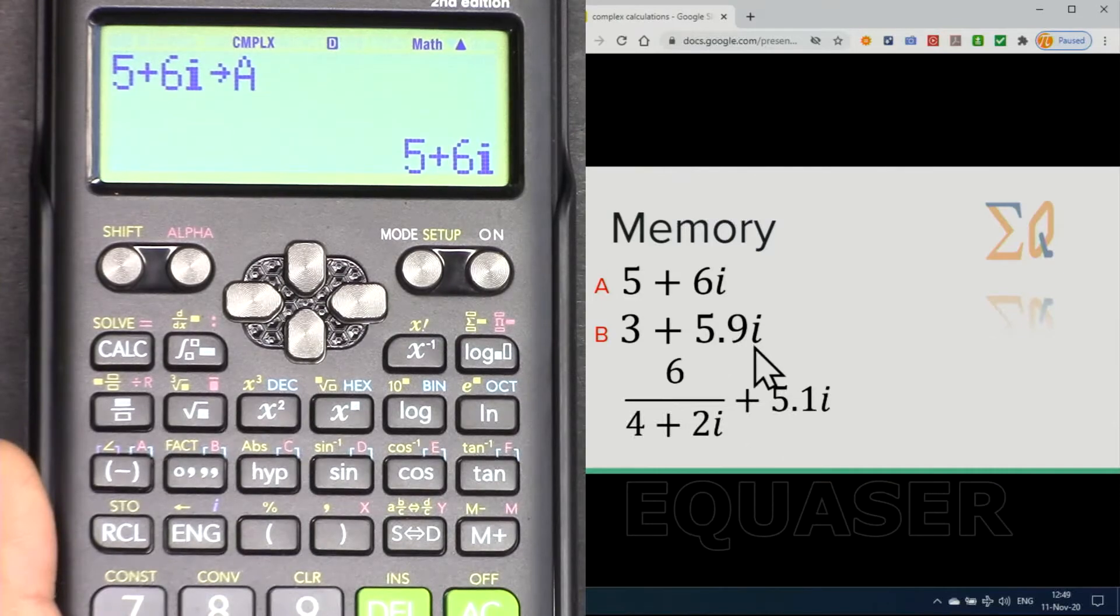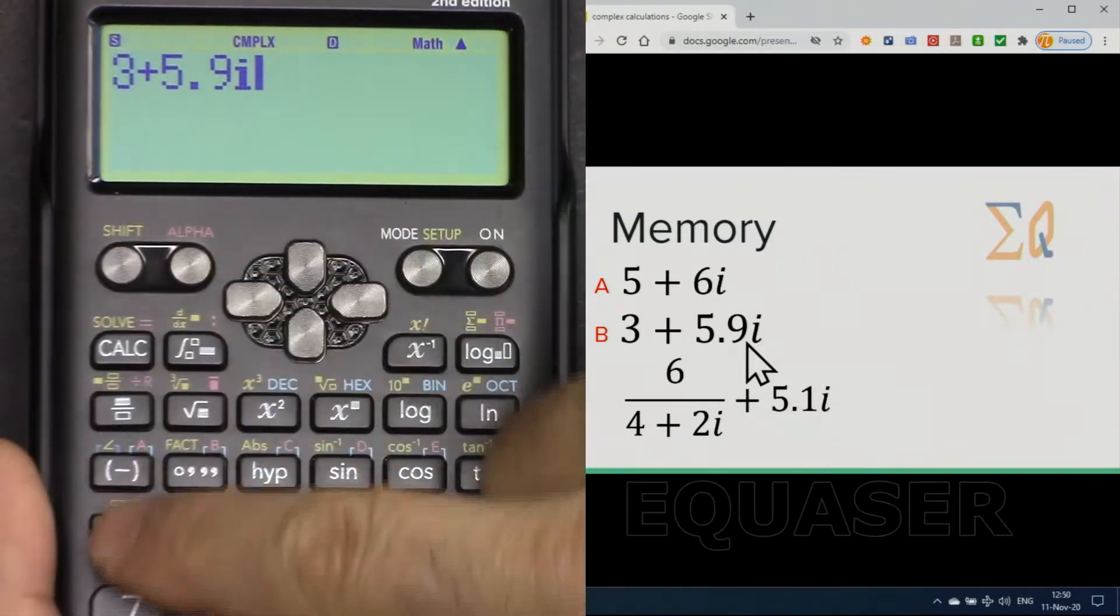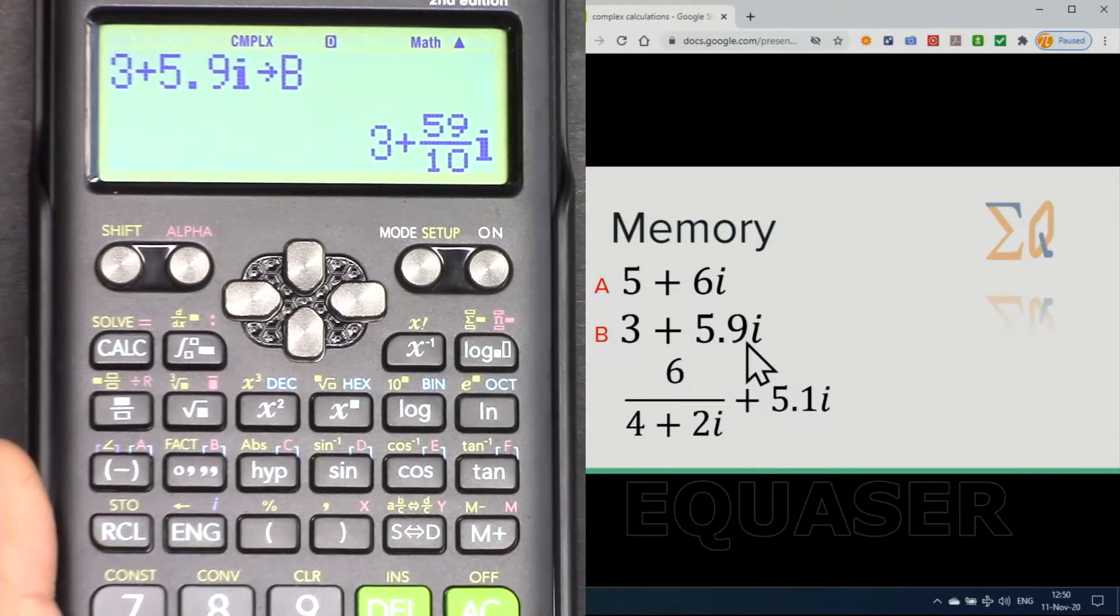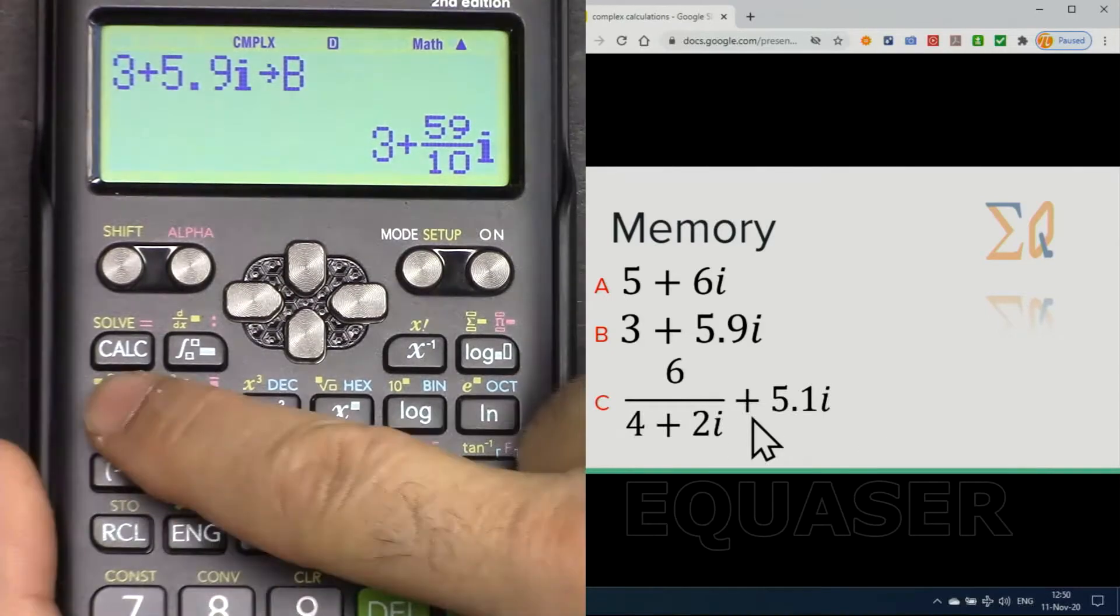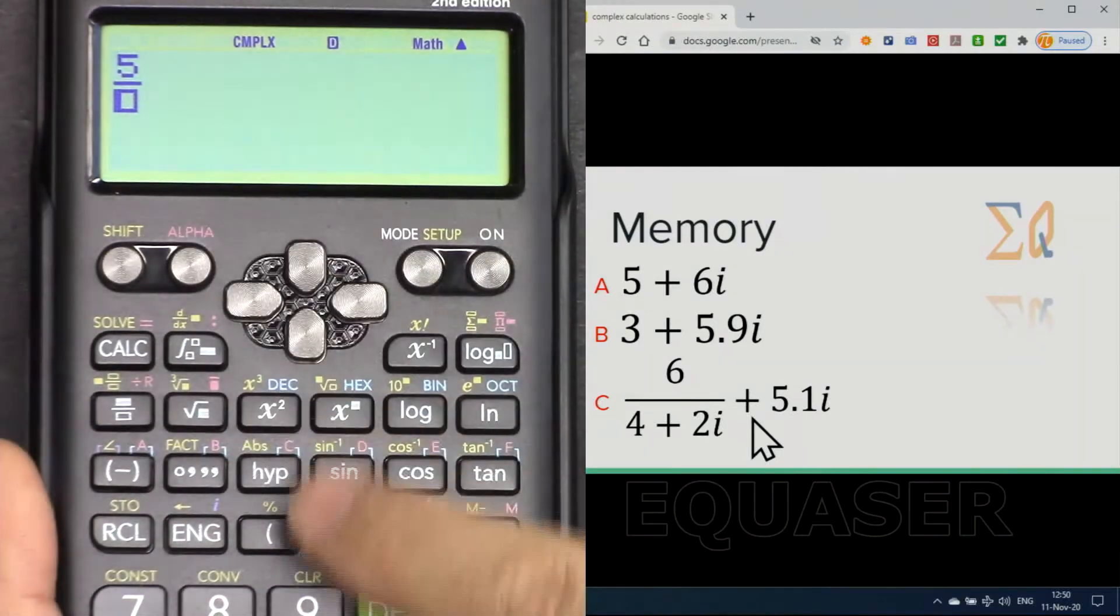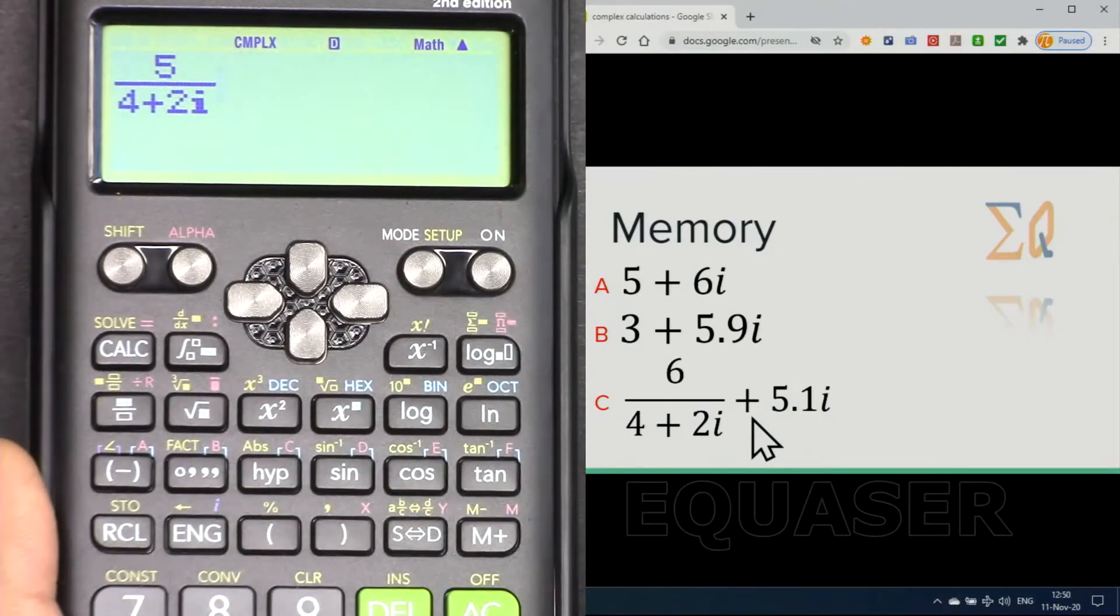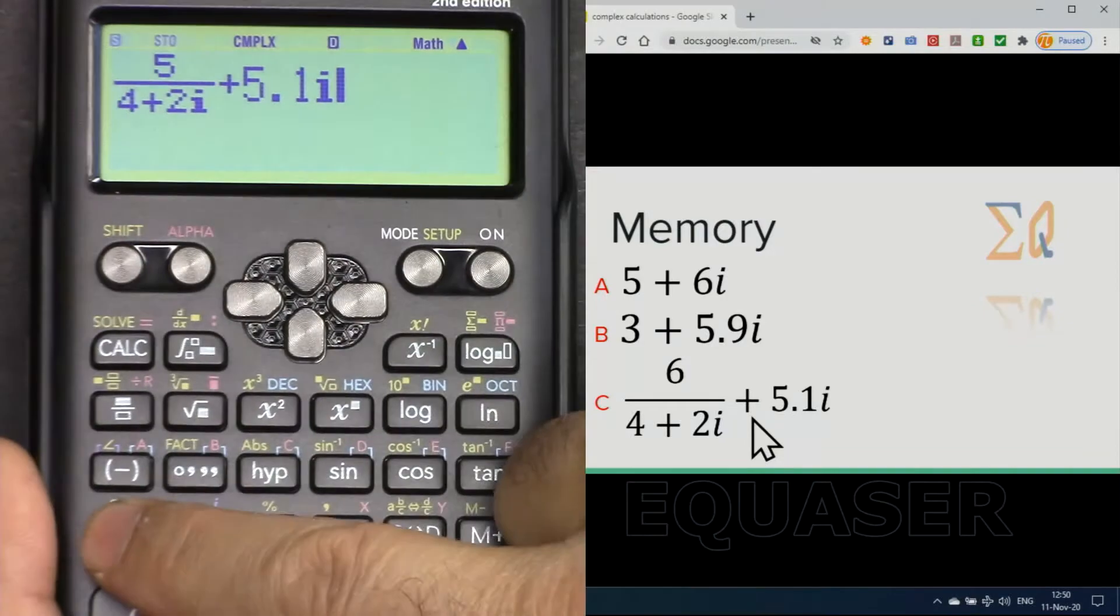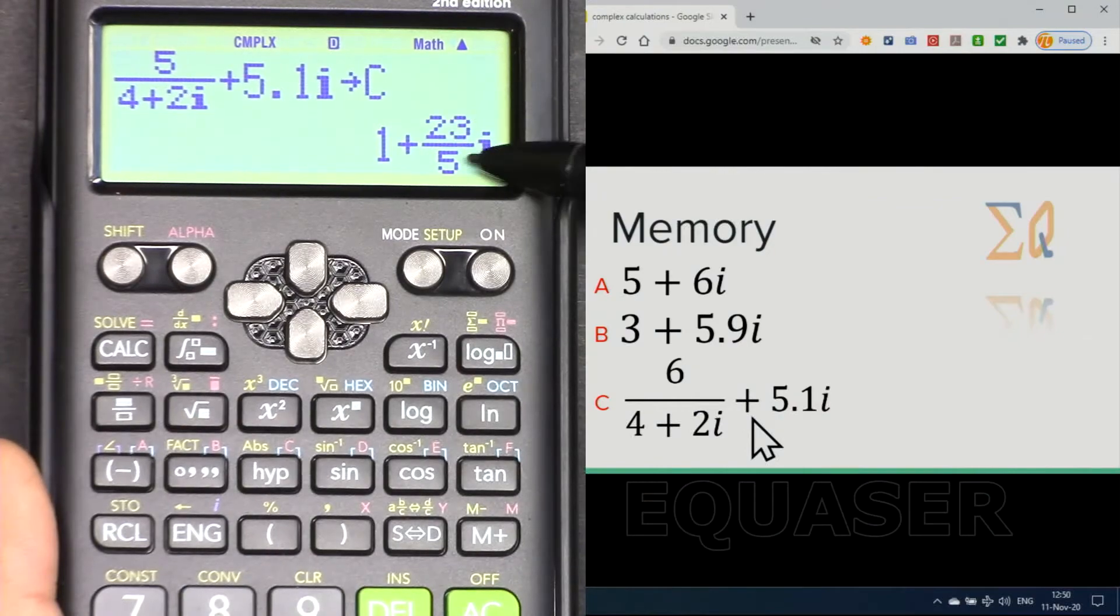Now 3 plus 5.9i, and this one into B. Press shift, store B. Now this is stored in B. Let's say you want to store this into C. First put 5 plus on the numerator, and the denominator 4 plus 2i, and with the arrow on the right side plus 5.1i, and then press shift, store, and then press C. All this value has been calculated, simplified, and stored here.